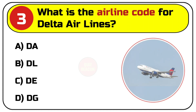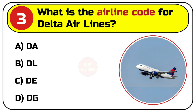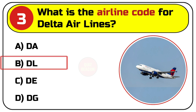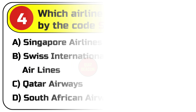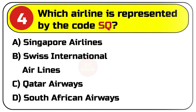Question number three: what is the airline code for Delta Airlines? Options are A. DA, B. DL, C. DE, D. DG. Correct answer is B. DL.